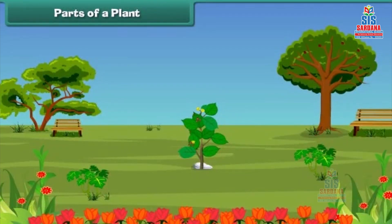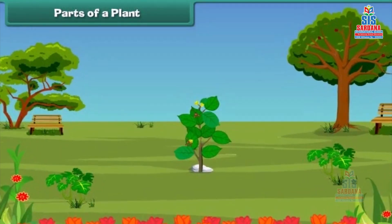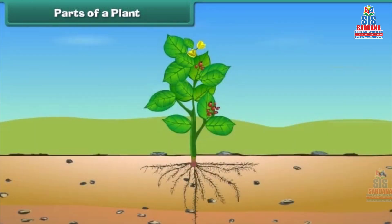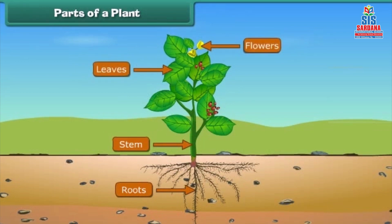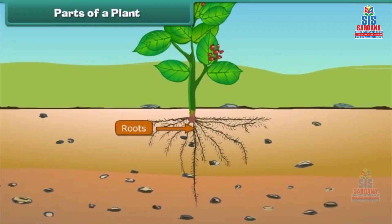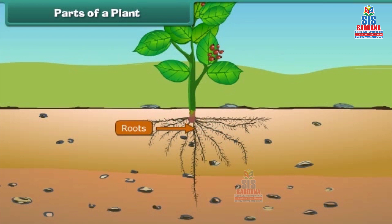Friends, let us discuss various parts of a plant. The main parts of a plant are roots, stem, leaves, flowers, and fruits. Let us know them one by one in more detail. Roots are the lower part of a plant. They grow in soil and help the plants to get water and minerals from the soil.